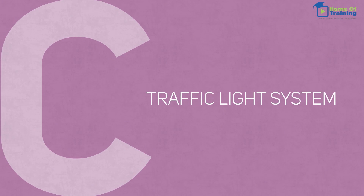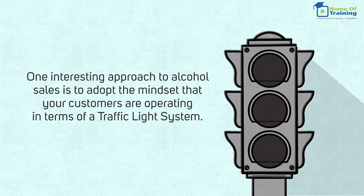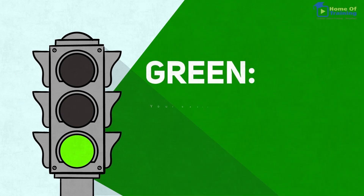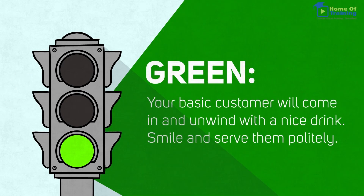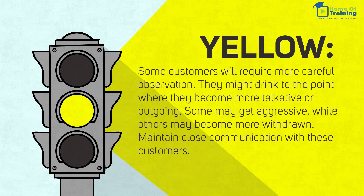Traffic light system. One interesting approach to alcohol sales is to adopt the mindset that your customers are operating in terms of a traffic light system. Green: your basic customer will come in and unwind with a nice drink — smile and serve them politely. Yellow: some customers will require more careful observation. They might drink to the point where they become more talkative or outgoing. Some may get aggressive while others may become more withdrawn. Maintain close communication with these customers.